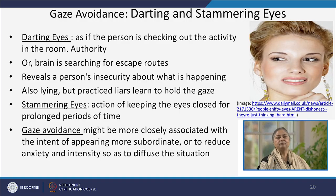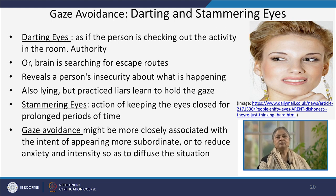However, gaze avoidance may also sometimes be associated with the intention of coming across as a more subordinate person, or it may be an excuse to reduce anxiety and intensity so as to diffuse the situation. We have looked at different types of eye contacts. Whereas a positive eye contact is very important, a negative or shifty eye contact also passes on negative associations. However, I would reiterate that in order to make the true interpretation of oculesic behaviour, it is important to authenticate it by looking at other associated signals also.